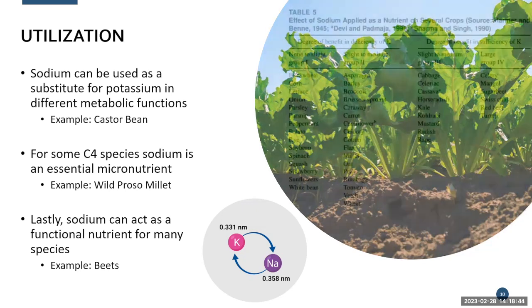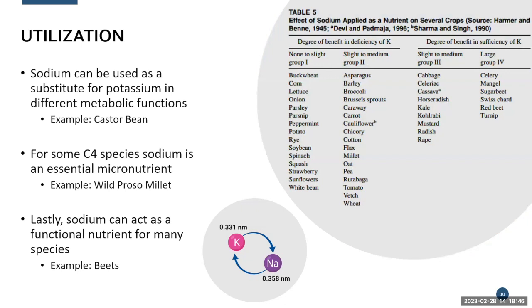Here's an example from a paper where they gave plants sufficient potassium but also added sodium. Some plants did better even though they already had enough potassium. Sugar beet, Swiss chard, red beet, and turnips all showed improvement. It's pretty interesting to see how some plants can utilize ions we think are so harmful.